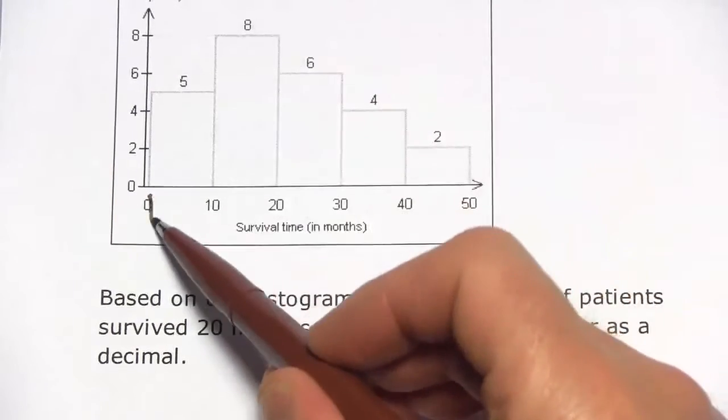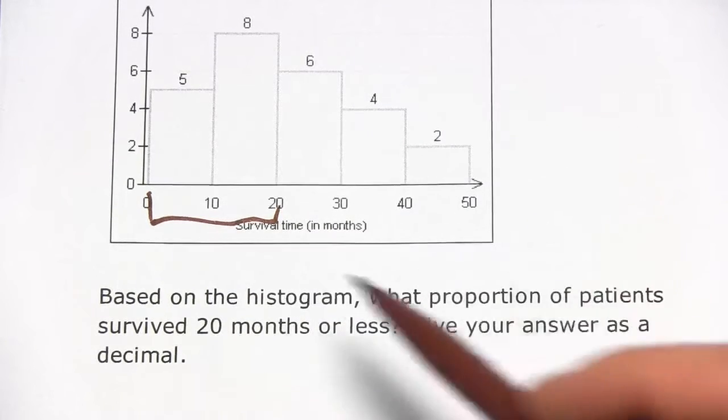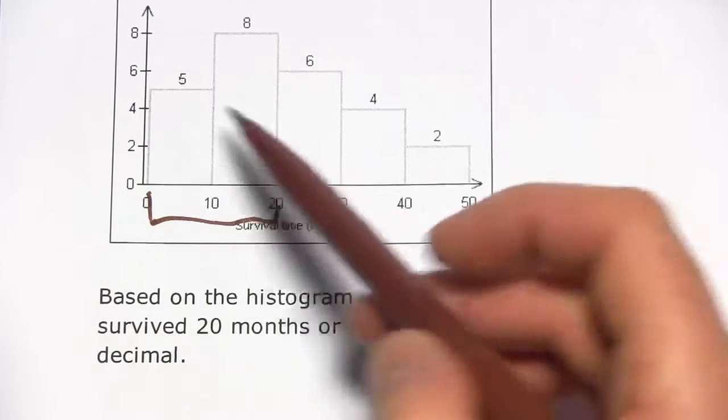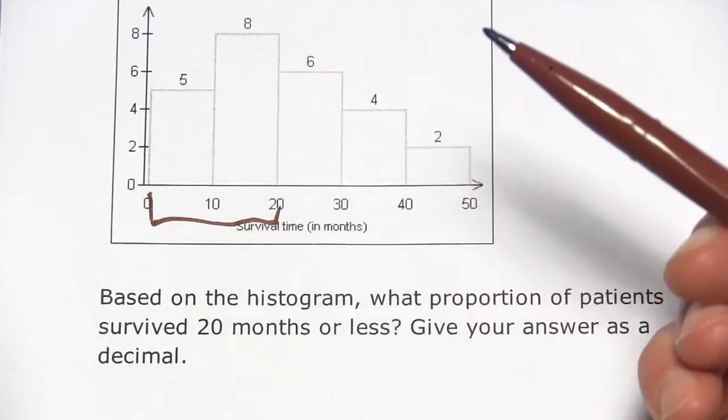So the 20 months or less would be all of these guys. We can do this in two different ways. The total sample size here is 25, all these numbers add up to 25. We could just take 5 plus 8 and divide by 25.